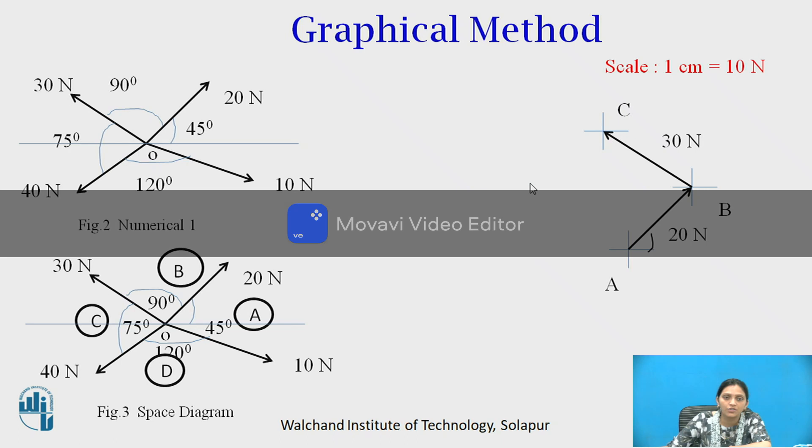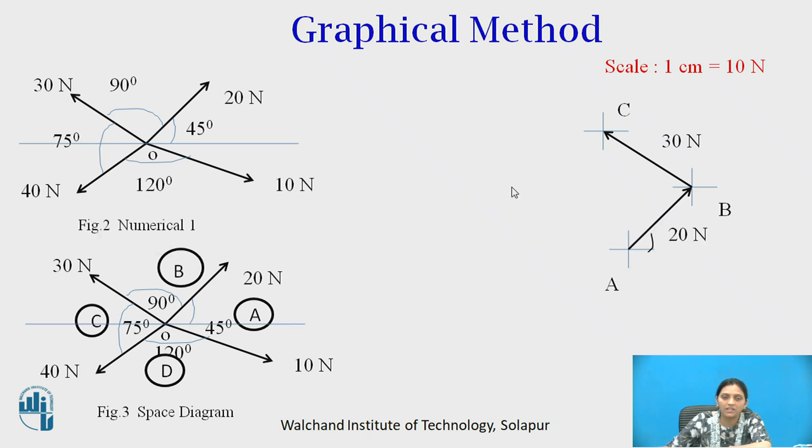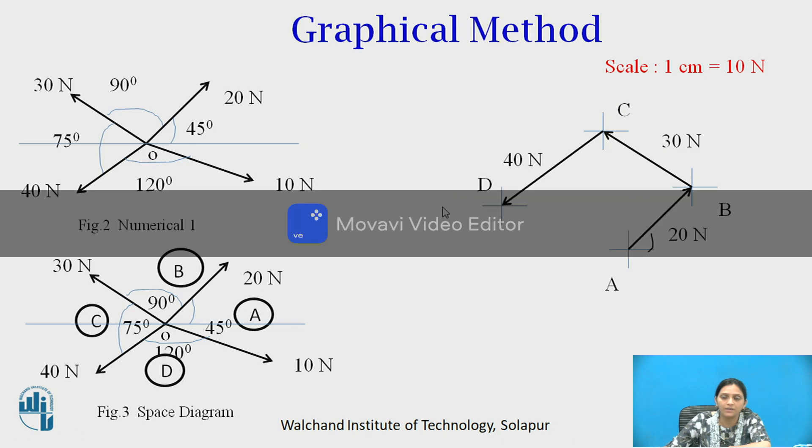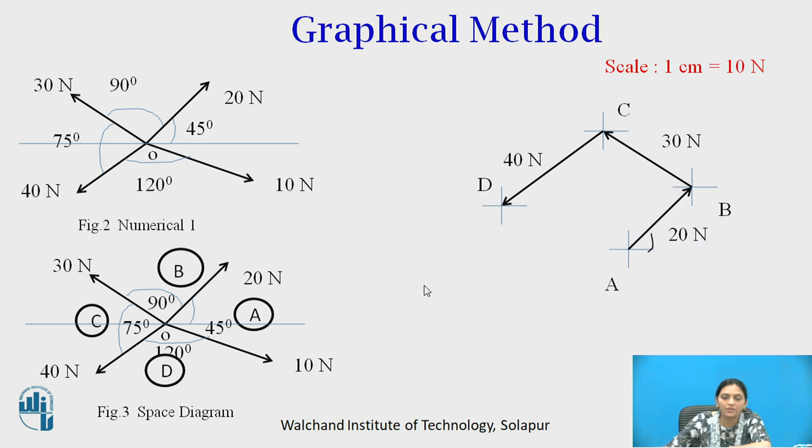Similarly, now show the force 40 Newton. From space C to D the force is 40 Newton. To maintain the angle draw parallel line to 40 Newton like this, and this 40 Newton force is acting from C to D and it is 4 centimeter line. Then D to A there is a force 10 Newton. So D to A if you draw the line of 1 centimeter it may end somewhere here. It is not reaching to the point A.